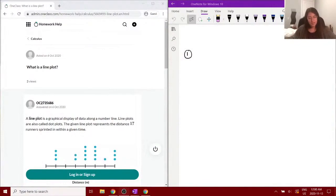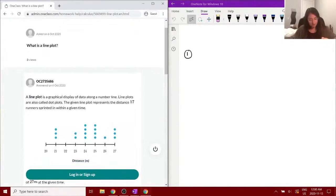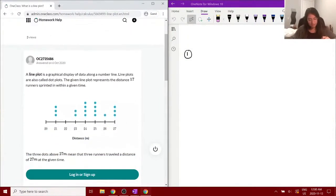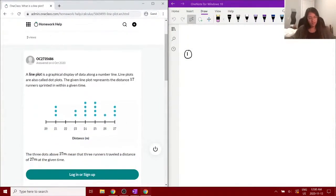Our first question today is: what is a line plot? We have a picture here of what a line plot looks like. It's a graphical display of data along a number line. Line plots are also called dot plots, so you might have heard it in two different ways.